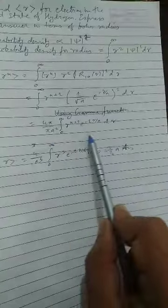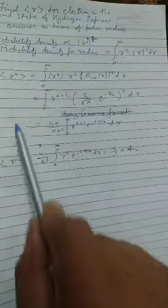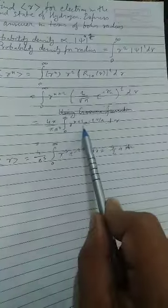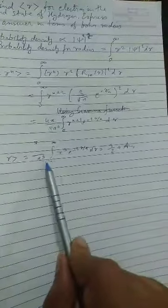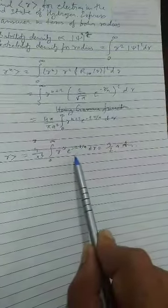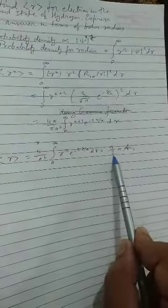This is the final step. Then in terms of R to the power 1, we put N equal to 1 here, and we got 4 pi A cube 0 to infinity R cube e to the power minus 2R by A dR, which we solve and get 3 by 2 A.